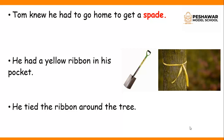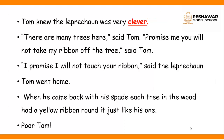Tom had a yellow ribbon in his pocket. He tied the ribbon around the tree in order to mark that specific tree from the others. Since Tom knew the leprechaun was very clever, he said to the leprechaun: 'There are a lot of trees here — promise me you will not take my ribbon off the tree.' Tom said you have to promise you are not going to remove this yellow ribbon. 'I promise I will not touch your ribbon,' said the leprechaun.